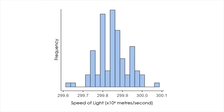Before we talk about the normal distribution in more detail, let's step back to the visualization of data and talk a little more about the histogram. The histogram here is made by Jamovi, and the data are based on Albert Michelson's measurement in 1879 on the speed of light in air. Due to this work, especially what's known as the Michelson-Morley experiment, he became the first American Nobel Prize laureate in science. By the way, this is the same Michelson from visual neuroscience where you learned about Michelson contrast.